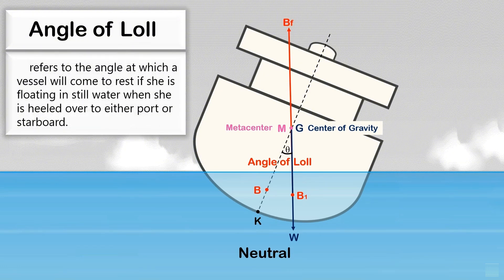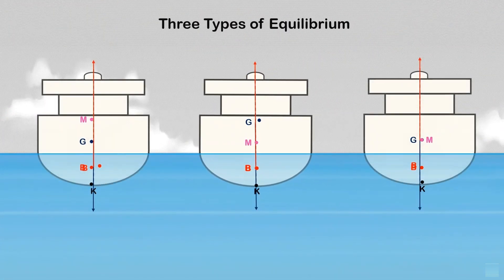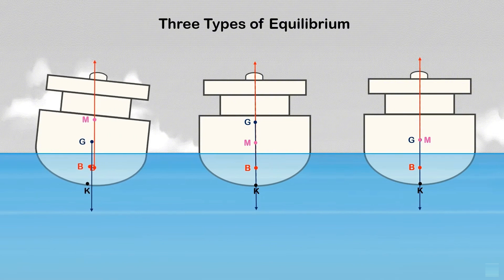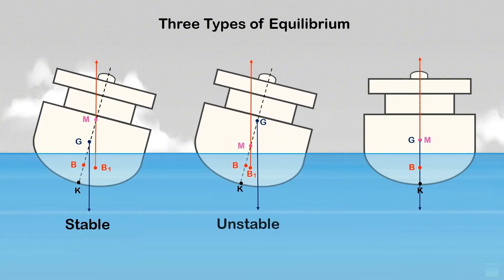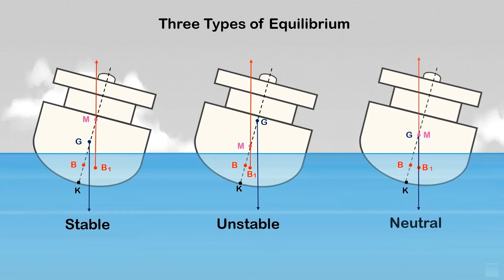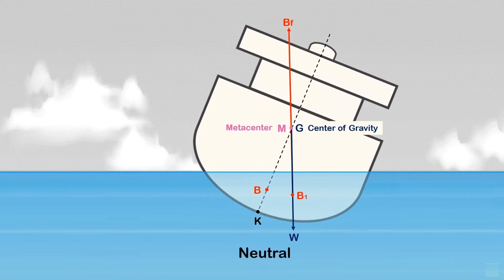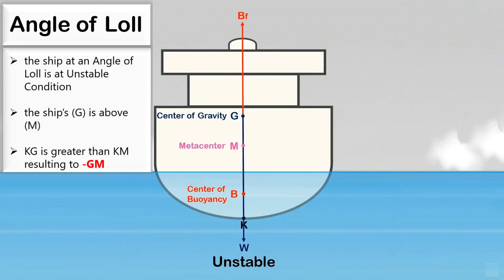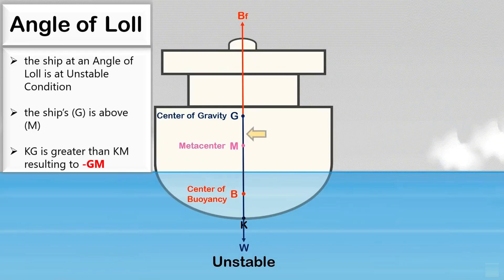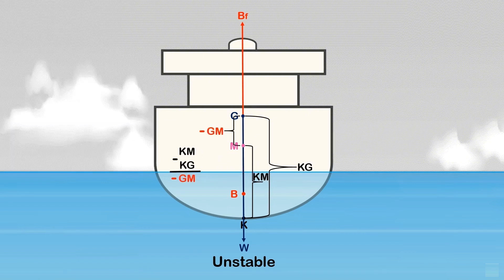Angle of loll refers to the angle at which a vessel will come to rest if she is floating in still water when heeled over to either port or starboard. In a previous video, various stability conditions were shown: stable, unstable, and neutral. This video shows the effect of unstable conditions on ship stability, leading to a neutral state — one of the dangerous scenarios in ship stability. The angle of loll means the ship is in an unstable condition where the ship's center of gravity G is above metacenter M, where KG is greater than KM, so the metacentric height GM is negative.